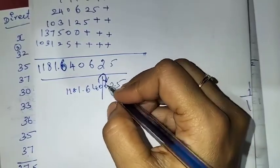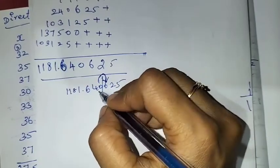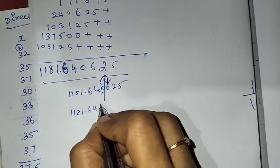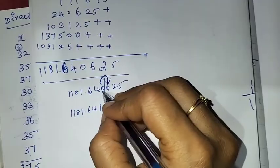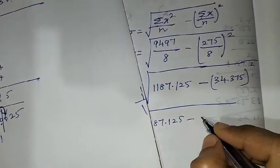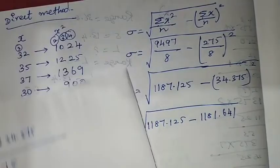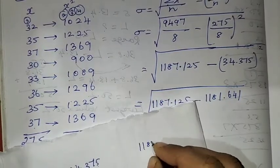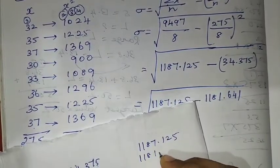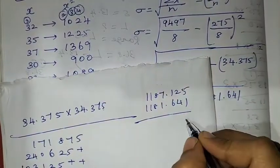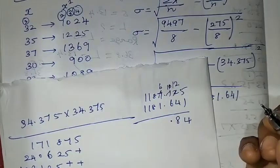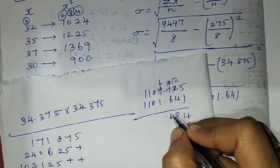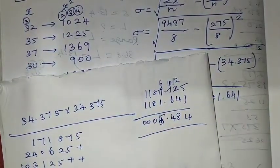Now we subtract: 1,187.125 minus 1,181.641 equals 5.484. So we now need the square root of 5.484.